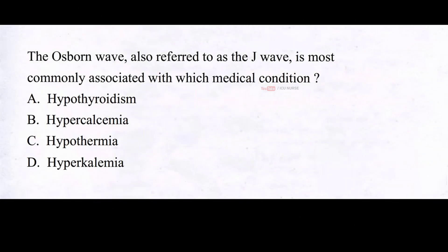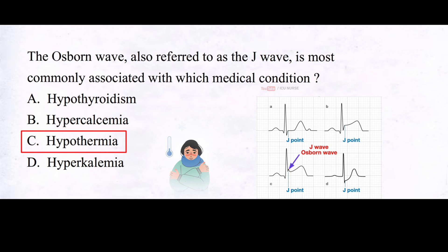The Osborne wave, also referred to as the J wave, is most commonly associated with which medical condition? A. Hypothyroidism. B. Hypercalcemia. C. Hypothermia. D. Hyperkalemia. The correct answer is C: hypothermia. The Osborne wave is an abnormal upward deflection in the J-point of an electrocardiogram, often associated with hypothermia, particularly when body temperature drops significantly. This wave appears as a small hump just after the QRS complex, most noticeable in leads where the J-point is visible. It can be a clue to hypothermia and other conditions affecting the heart's electrical activity.